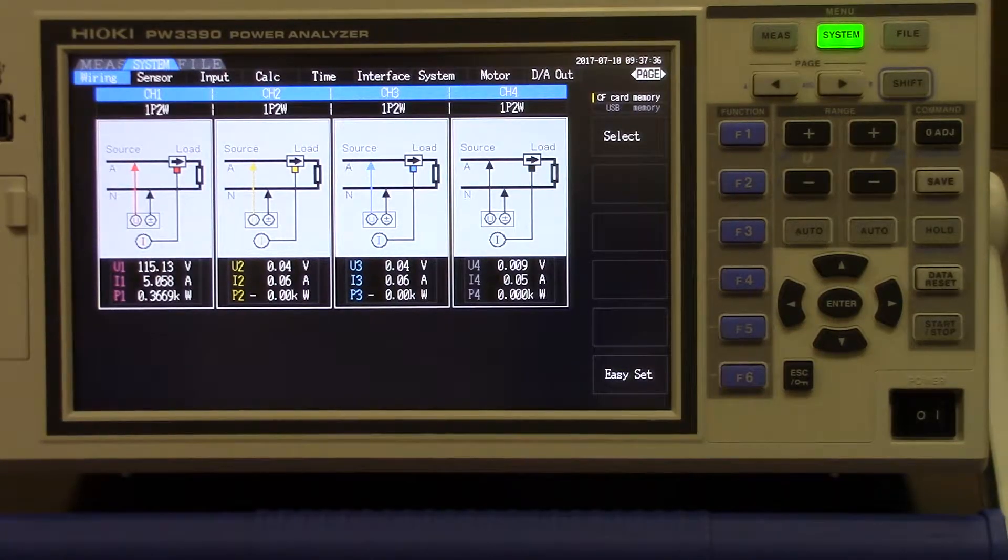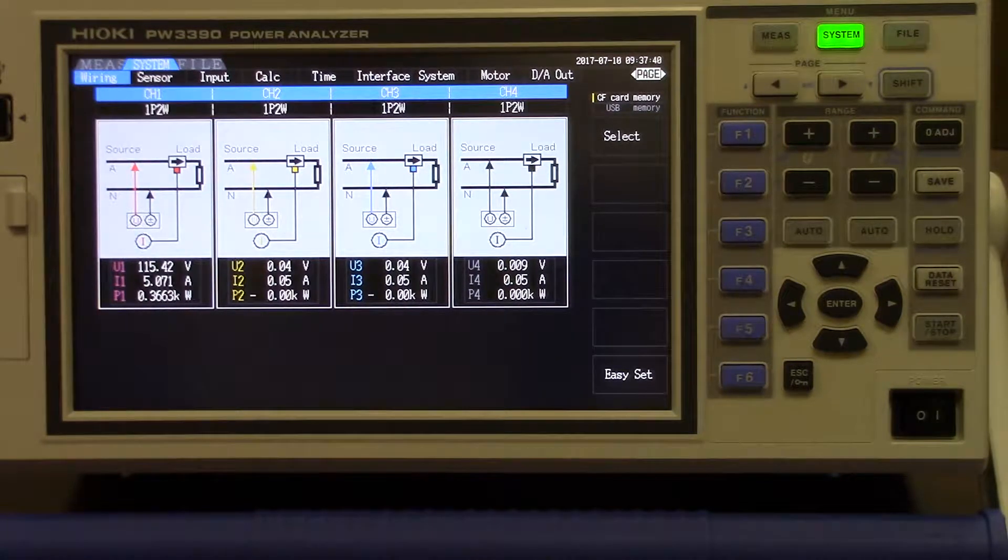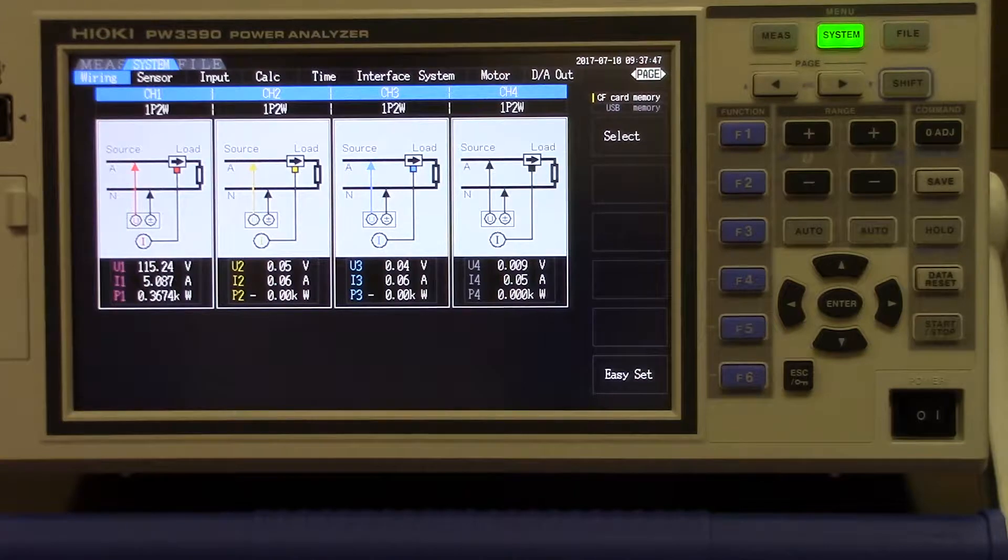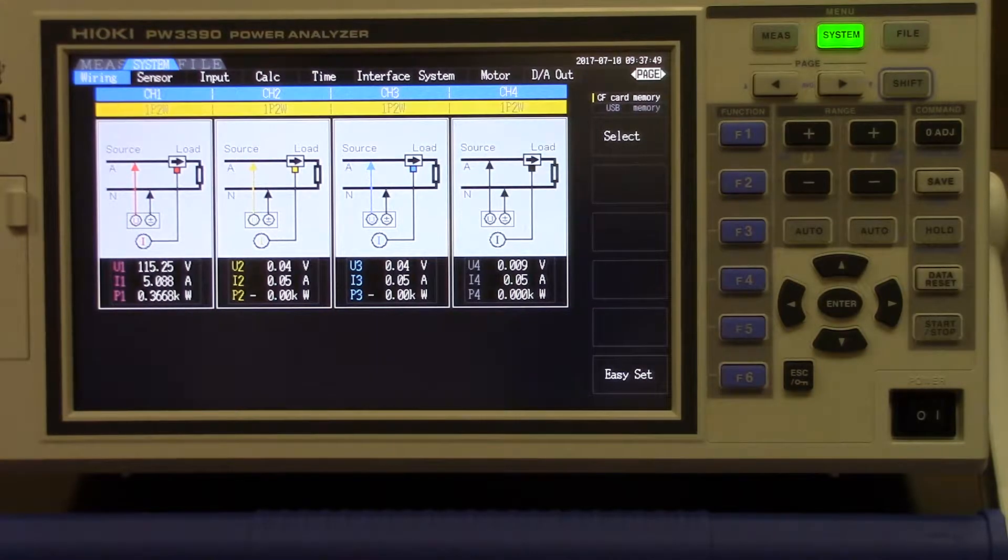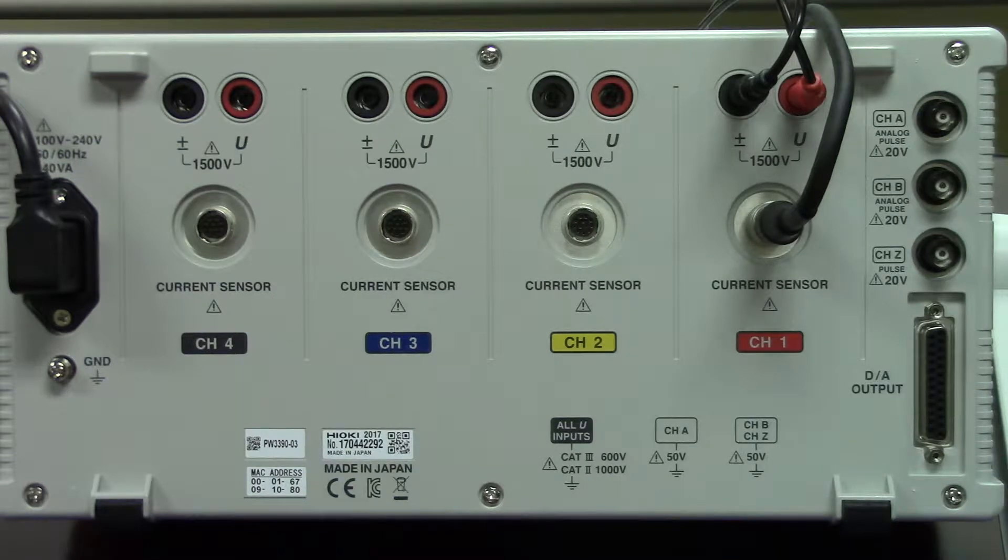This is the Hioki PW3390 power analyzer, which is a single phase 2-wire to 3-phase 4-wire 4-channel power analyzer that can be used to measure systems and inverters operating from DC up to 200 kHz. Voltage measurements can go as high as 1500 volts AC and DC and currents from 20 amps up to 1000 amps depending on the clamp used.